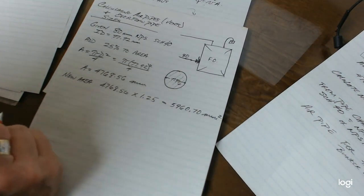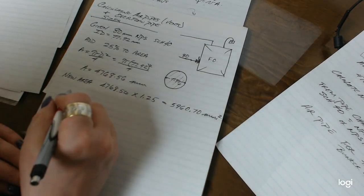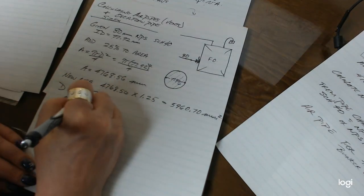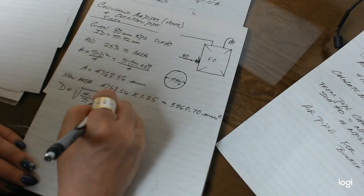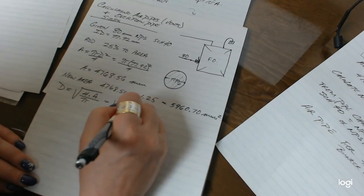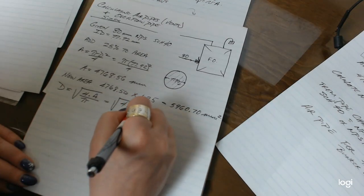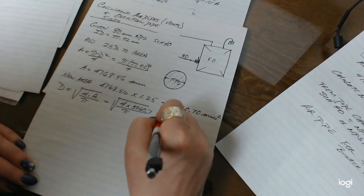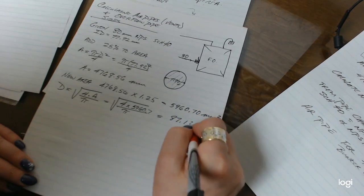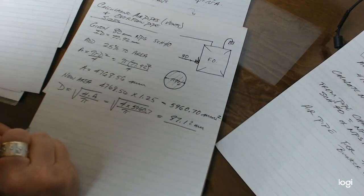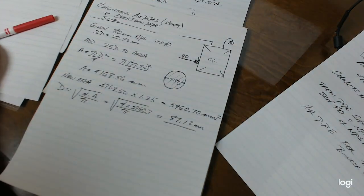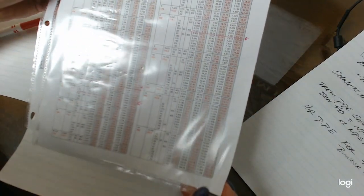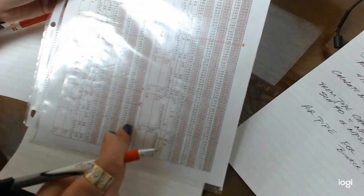Now what I want to do is go back and calculate my new ID for my larger pipe. So in doing so, I go D is equal to the square root of 4 times A divided by pi. And in this case, I'm looking at the square root of 4 times 5,960.7 over pi. And my new ID is going to be 87.12 millimeters. So now I go back to my pipe chart that I've shown you guys before. And once again, this is online because it's very small.